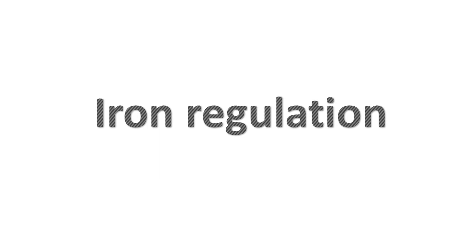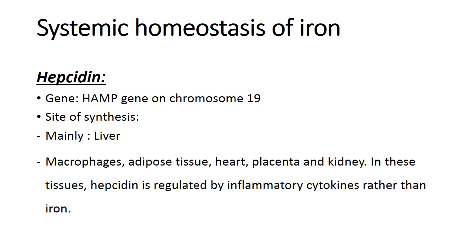The main protein involved in iron regulation through ferroportin control is hepcidin. From its name, it is a protein formed in the liver — 'hep' indicating hepatic origin — and it has antimicrobial action. It was formerly known as the hepatic antimicrobial peptide, and the gene responsible for its synthesis is still known as the HAMP gene, located on chromosome 19. A small amount of hepcidin is also synthesized by other tissues such as macrophages, adipose tissue, heart, and placenta, but its synthesis in these tissues is regulated by inflammation rather than iron state.